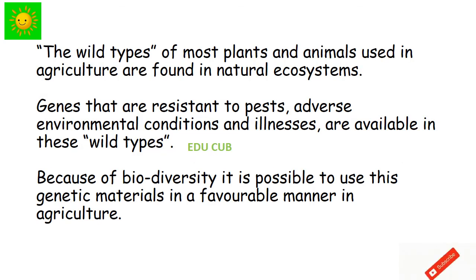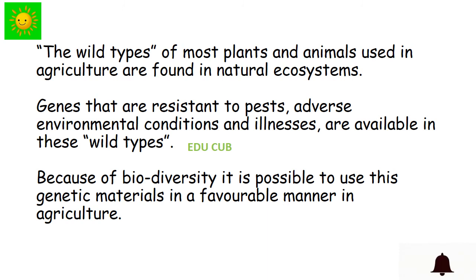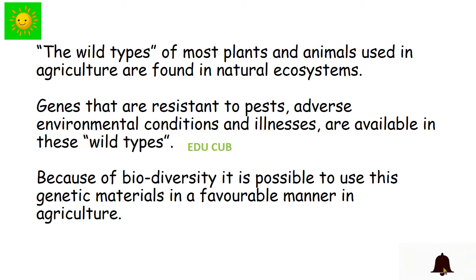The wild types of most plants and animals used in agriculture are found in natural ecosystems. Genes that are resistant to pests, adverse environmental conditions, and illnesses are available in these wild types. Because of biodiversity, it is possible to use these genetic materials in a favorable manner in agriculture.